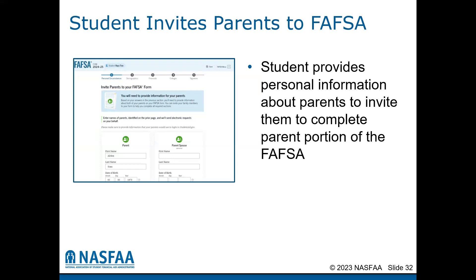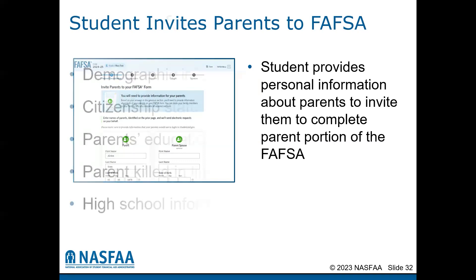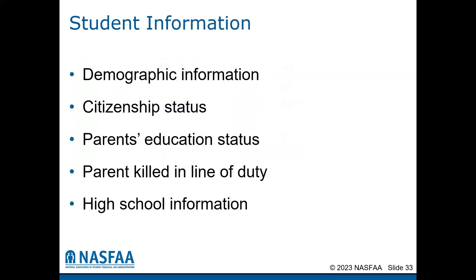It is important to note that an additional change with the 24-25 FAFSA is that the parent who pays child support is considered providing that support for the student, and that the parent who receives the child support will now claim these dollars as an asset, not as support provided. These changes will potentially result in a student listing a different parent as the parent of record compared to previous years' FAFSAs.